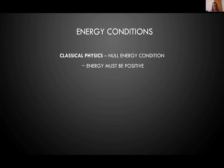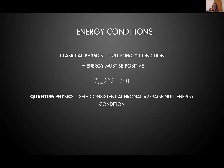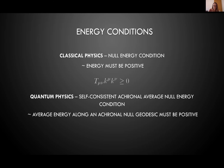The null energy condition is basically a statement about the positivity of energy — in mathematical terms, it's a double contraction of the stress tensor that has to be positive. If we switch to quantum physics, we get something more elaborate: the self-consistent achronal average null energy condition (SCANEC). What it basically means is that the averaged energy has to be positive along a special achronal null geodesic, and mathematically it's just an integrated version of the null energy condition along that geodesic.